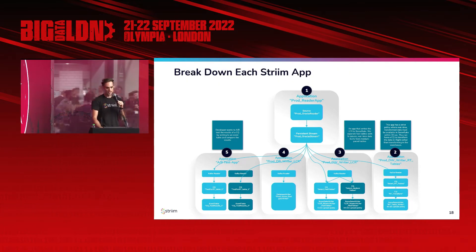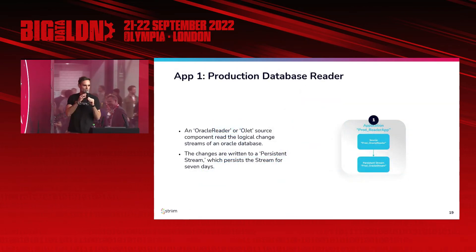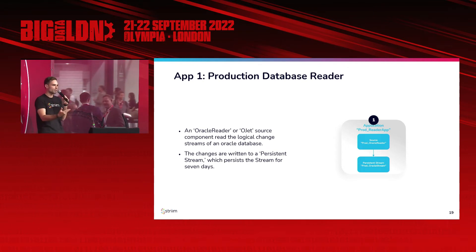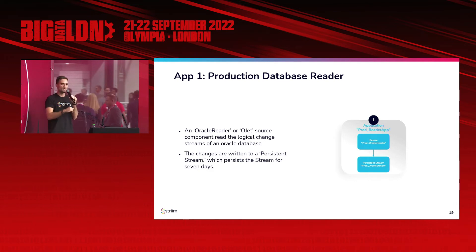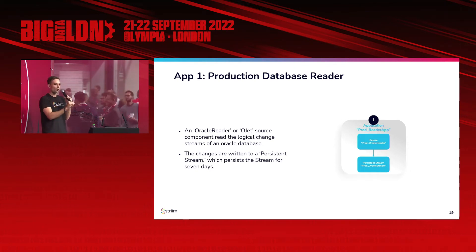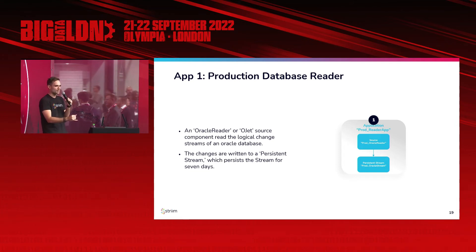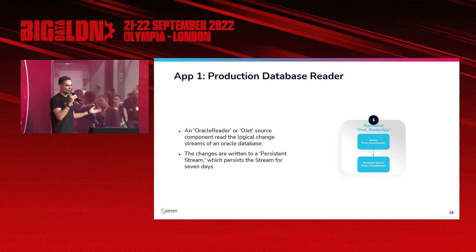Starting with the production database reader: we're using Stream's Oracle Reader, or optionally Stream's OJet Reader — the world's fastest change data capture engine for Oracle. We're doing log-based change data capture off a production Oracle database. We only have one reader on the database to minimize overhead, because you don't want more clients polling an operational database — causing additional disk IO and compute. So you minimize that by doing change data capture with a single reader.